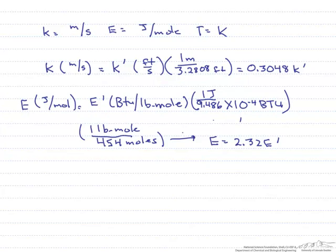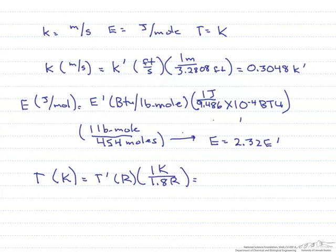And finally T, which we need in Rankine. So T in Kelvin is going to equal T prime in Rankine, and the conversion is that 1 Kelvin is equal to 1.8 Rankine, or T equals 0.55 T prime.